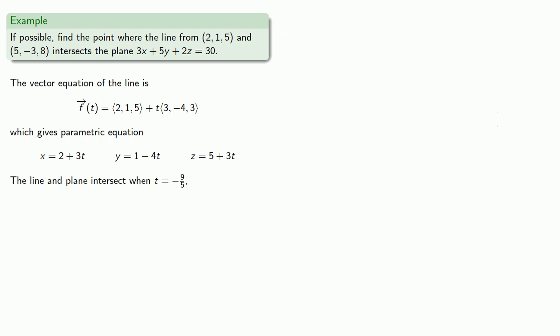Now, since we actually want the coordinates of the point, we know that t = -9/5, so we'll substitute those in and find our coordinates x, y, and z.